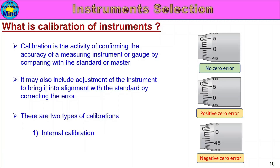The first type is internal calibration. The second type is external lab calibration — a third party lab calibration. An instrument or gauge can be calibrated through external lab calibration. You can see more details and the link in the description.